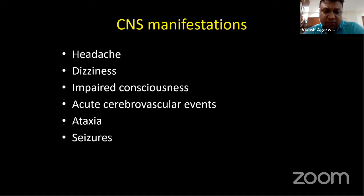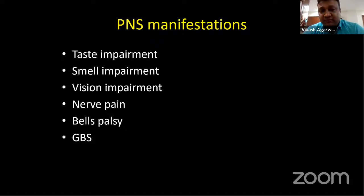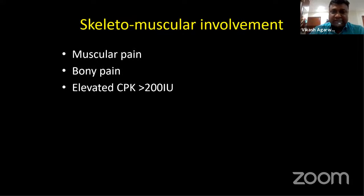Central nervous system manifestations include encephalopathy, seizures, and impaired consciousness. For peripheral nervous system involvement, Bell's palsy and Guillain-Barré syndrome are key concerns. Isolated, non-diabetic Bell's palsy or atypical GBS — presenting without fever or cough — should trigger a COVID-19 test, as the preceding viral infection (possibly COVID) typically occurs two to three weeks before the neurological manifestation.